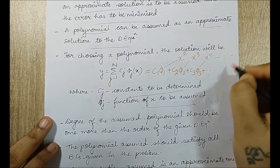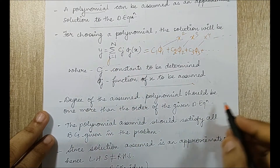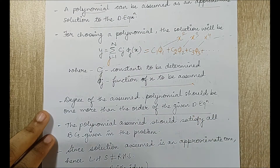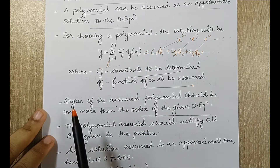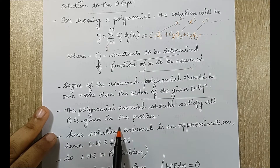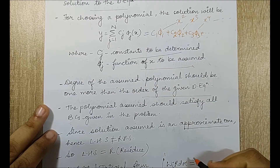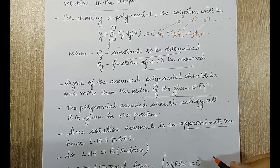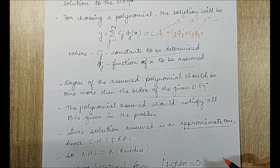The degree of the assumed polynomial should be one more than the order of the given differential equation. So if your differential equation has order 2, you assume a polynomial of degree 3. The polynomial assumed should also satisfy all the boundary conditions given in the problem. Since the solution assumed is an approximate one, that is why we are working in FEM — you assume the solution, solve it, get answers, and compare with the exact solution.